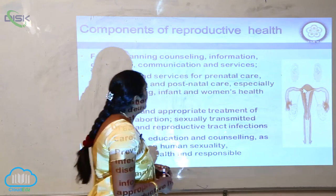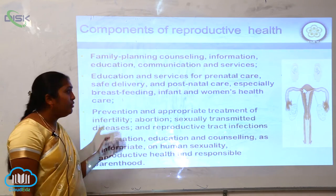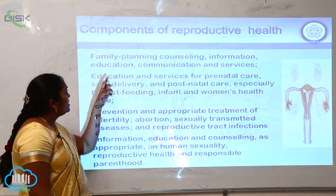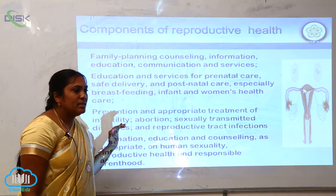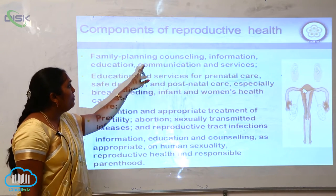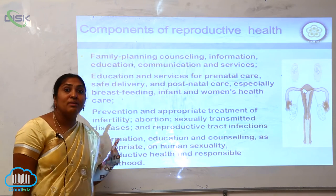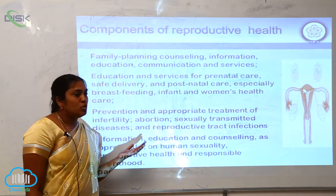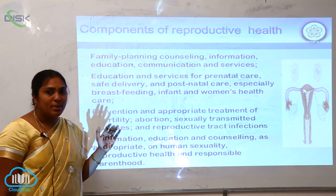What is happening in reproductive health involves family planning, counselling, information, education, communication, and services. The first thing is that married people — both male and female — must be given family planning counselling. They must also be given information about what will be good and what will be bad for reproductive health, so information and counselling must be provided.